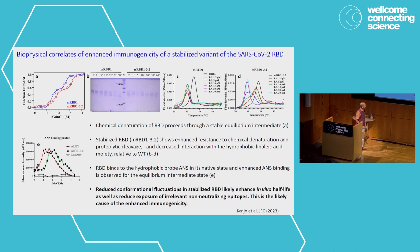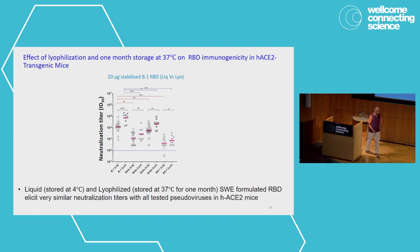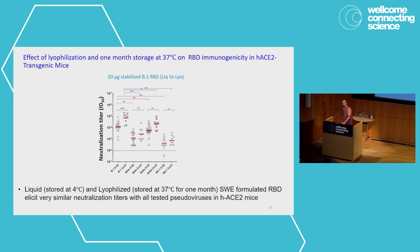We can also look at the actual immunogenicity of protein stored for a period of time — in this case one month at 37 degrees. Gray circles show the immunogenicity of that stored protein versus the immunogenicity of protein kept at four degrees. We are able to store protein for extended time at high temperature and it does perfectly well in immunization studies.